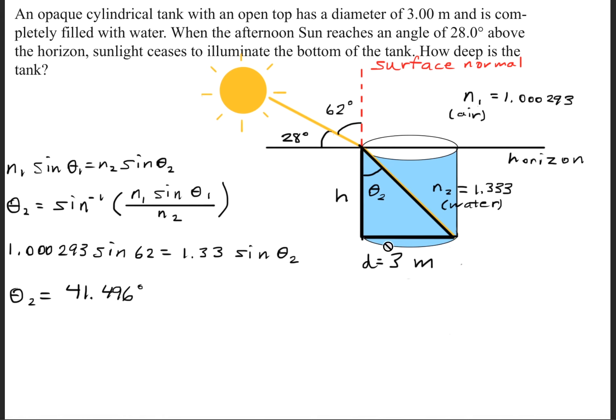Now focus your attention on this triangle that I have darkened right here. So the question is asking how deep is the tank? So that's essentially the height of the cylinder, and now that we've found theta 2, we can simply use our trigonometric properties to find the height.